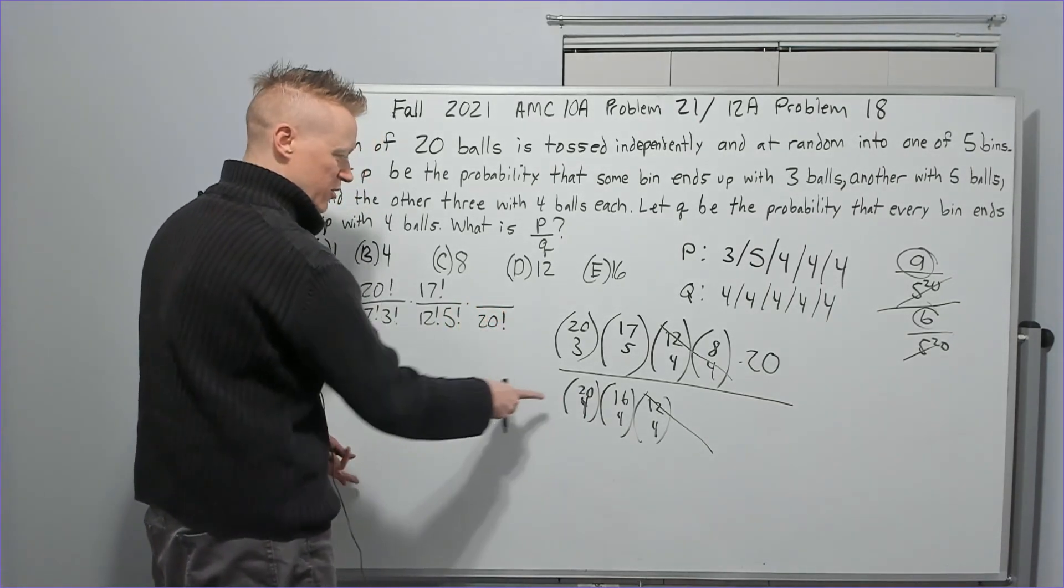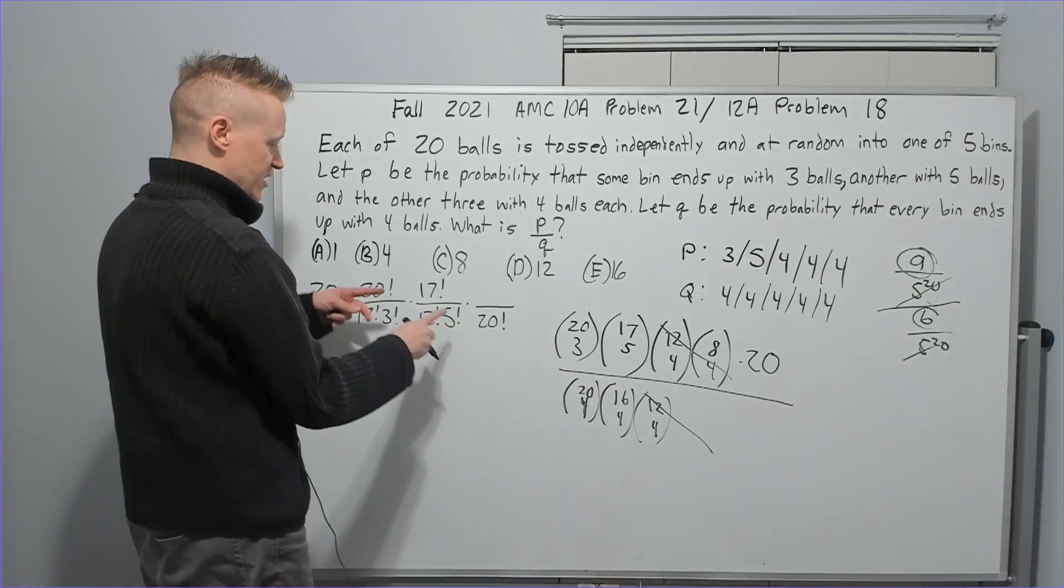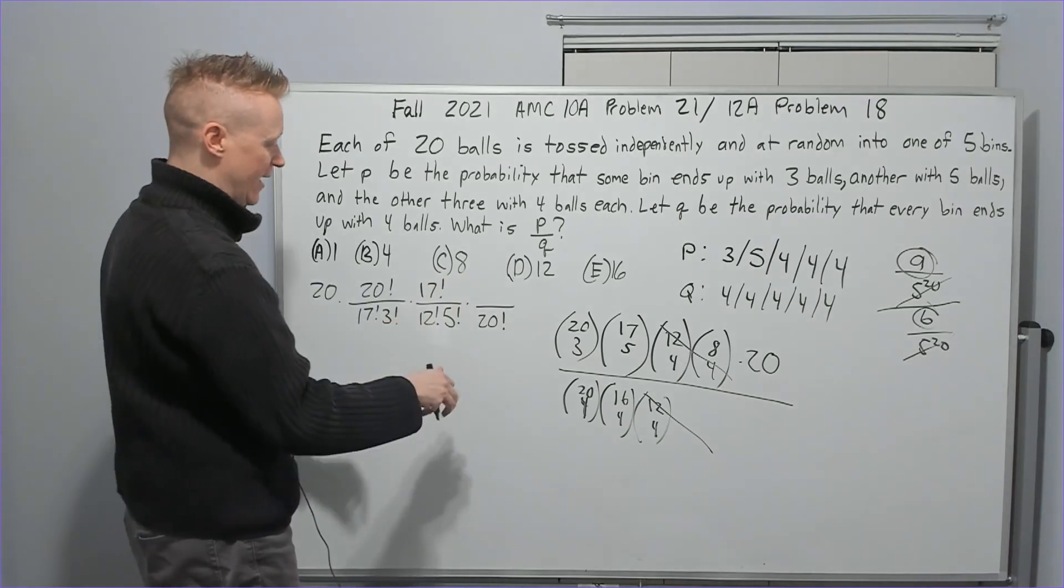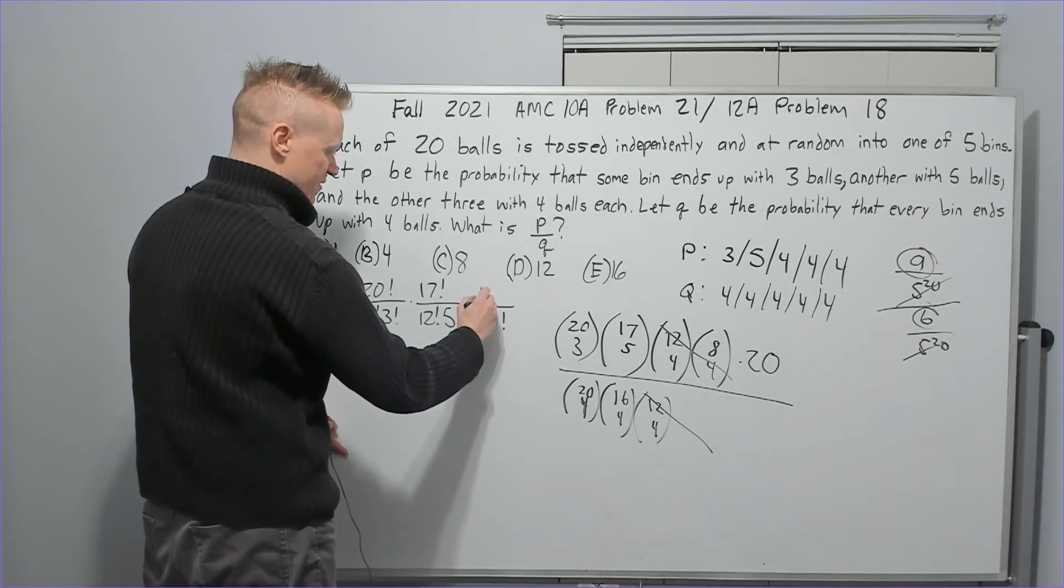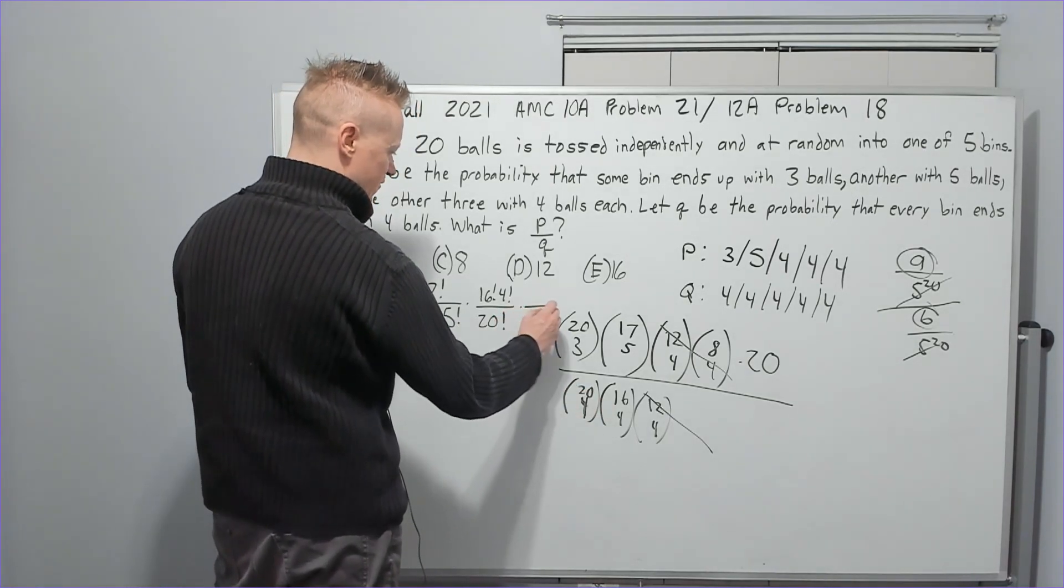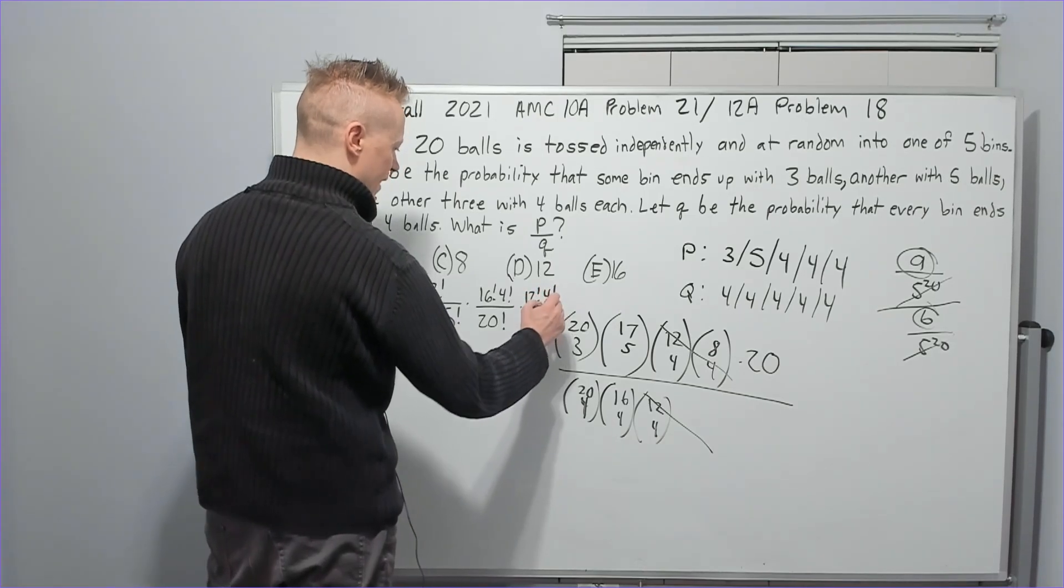So we'll put 20 factorial here, which is the numerator of this, but it flips when it goes to the, because it's a fraction over a fraction. You take it, you flip the other one and multiply instead. So then I'm going to have 16 factorial and 4 factorial. Let's flip this one too. The 16 factorial goes down here. There's 12 factorial, 4 factorial.